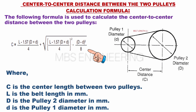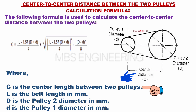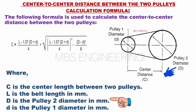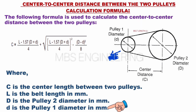Where: C is the center length between two pulleys, L is the belt length in mm, D is the pulley 2 diameter in mm, and d is the pulley 1 diameter in mm.